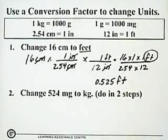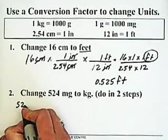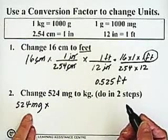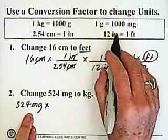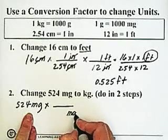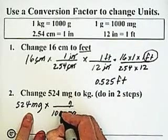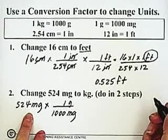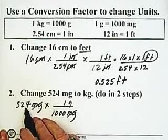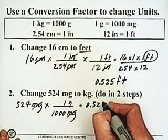In the second question, we're going to take 524 milligrams and change it to kilograms. I'm going to do this one in two steps. I start with 524 milligrams and multiply it by the relationship between milligrams and grams. I know there are 1,000 milligrams in one gram, so I put milligrams in the denominator and grams in the numerator. My milligrams cancel, and I take 524 times one gram divided by 1,000, which gives me 0.524 grams.